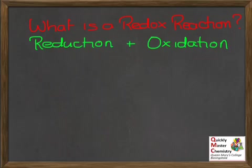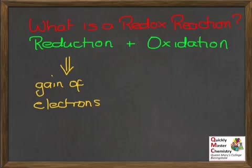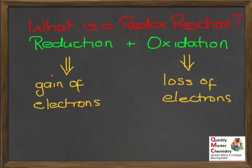You need to know a very specific technical definition for each of these words. We'll start with reduction — it means gain of electrons. So in a redox reaction, one thing will be gaining electrons. Oxidation, on the other hand, means loss of electrons. So in a redox reaction, something else will be losing electrons.